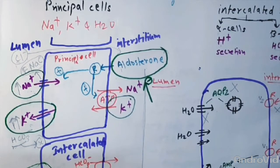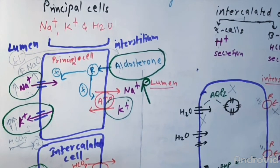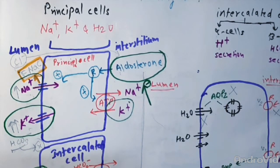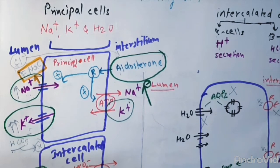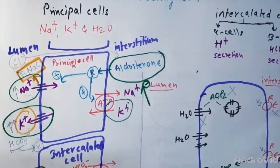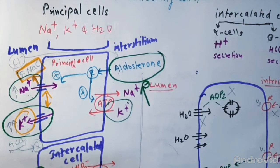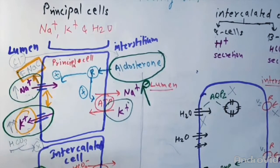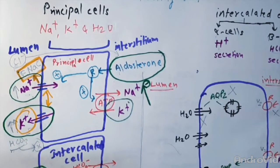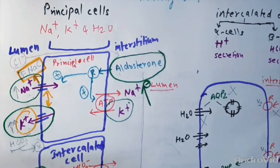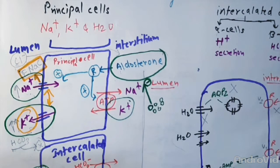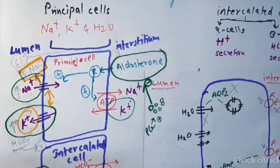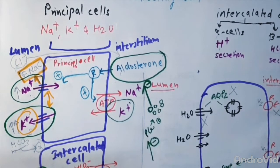Amiloride and triamterene do not block aldosterone, but instead directly interfere with the epithelial sodium channel in the apical membrane. Since potassium secretion and sodium entry both are coupled in the collecting tube, sodium channel blockers are also effective potassium sparing diuretics. The action of aldosterone antagonists depends on renal prostaglandin secretion, so their action can be inhibited by NSAIDs.